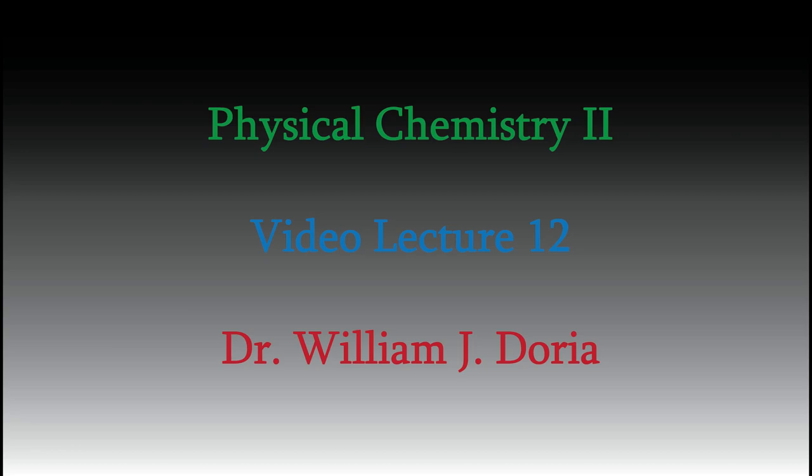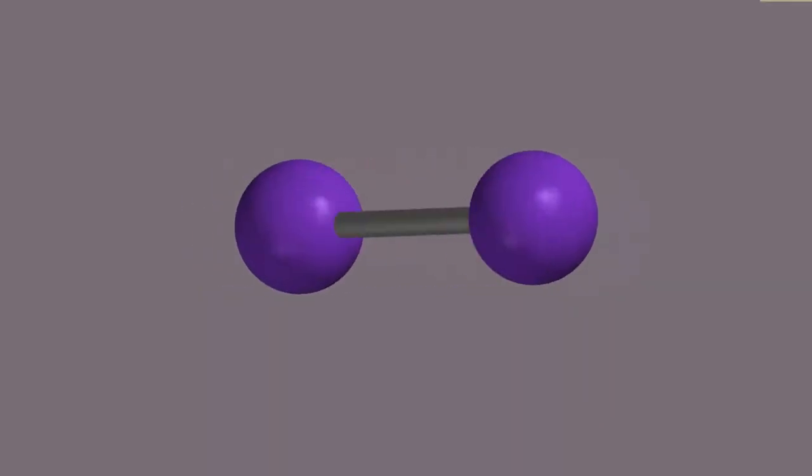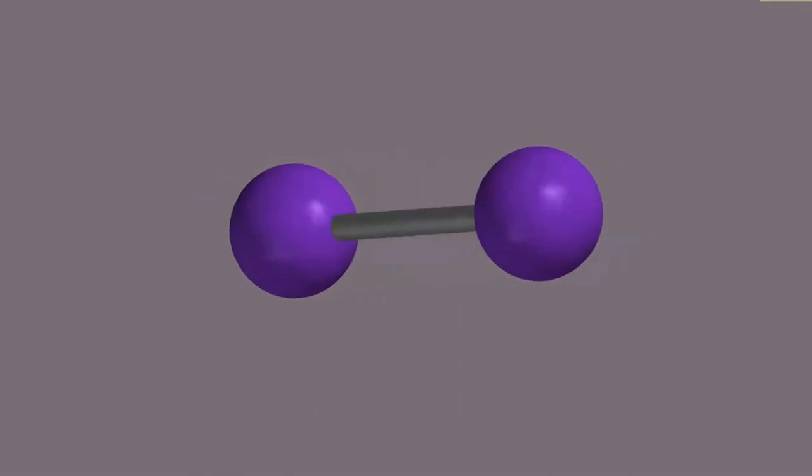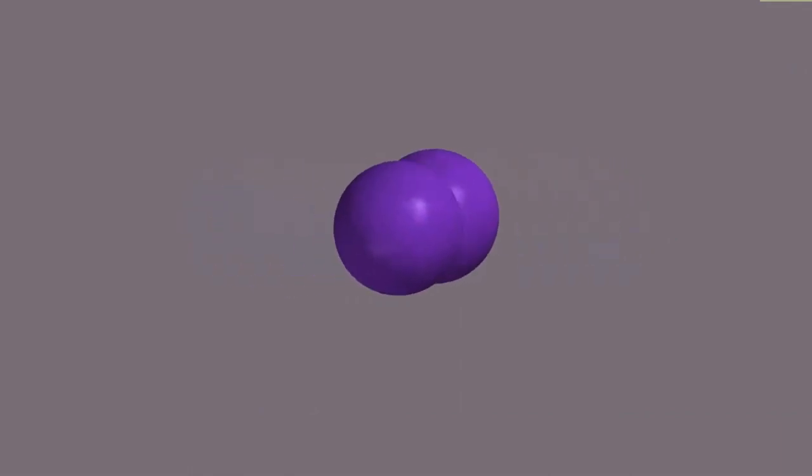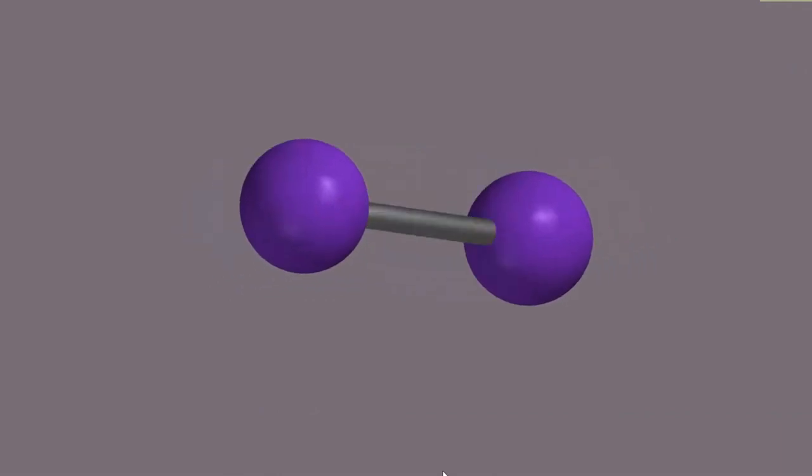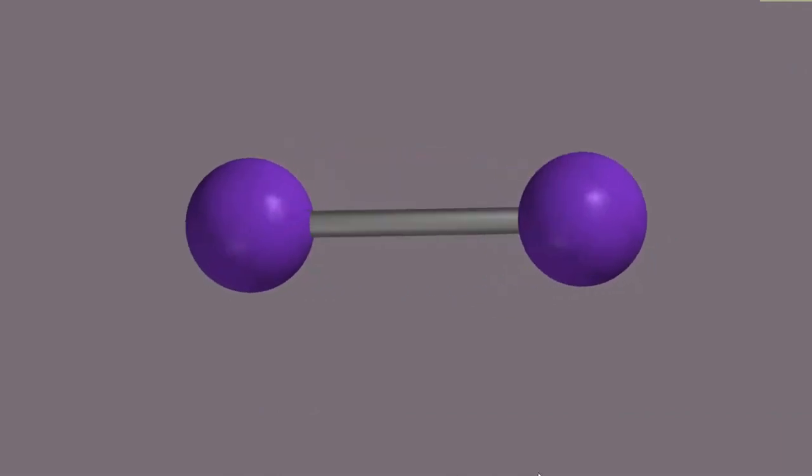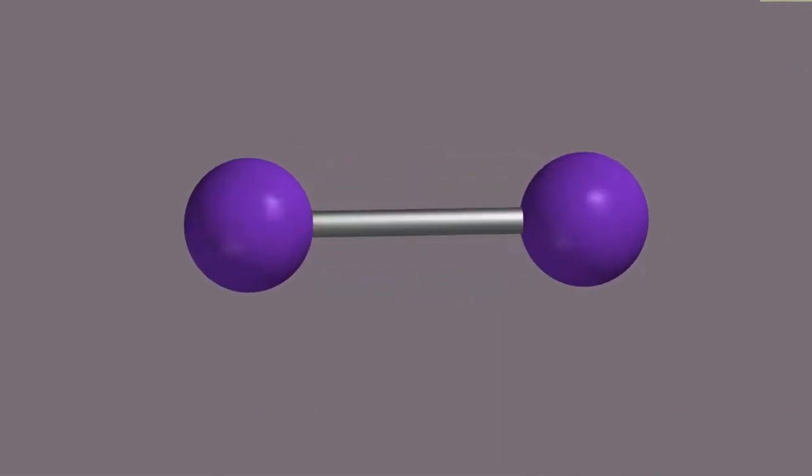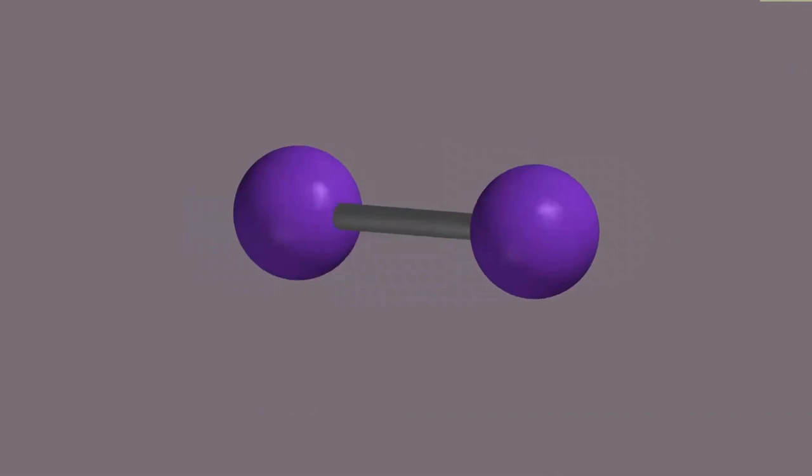Hi, and welcome again to my videos for Physical Chemistry 2. Last time we looked at the rigid rotor model of diatomic molecules and used it to predict the energy needed to excite a molecule to a high rotational state. We found that rotational energy is quantized, meaning the molecule can only have certain discrete energies, not just any value as classical physics predicts.